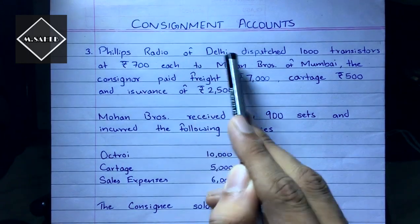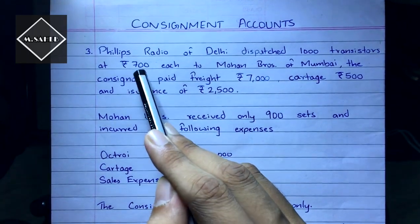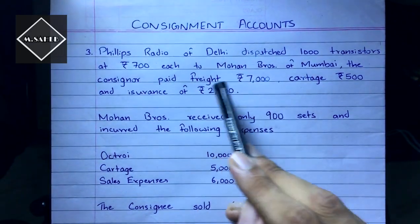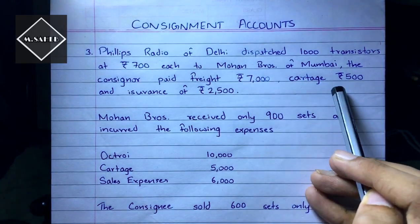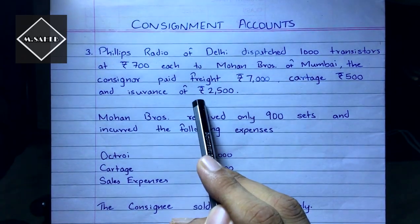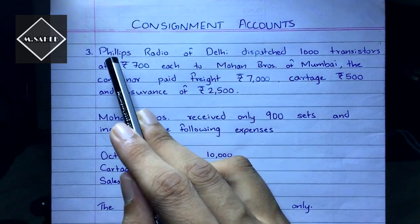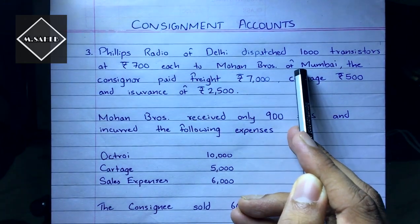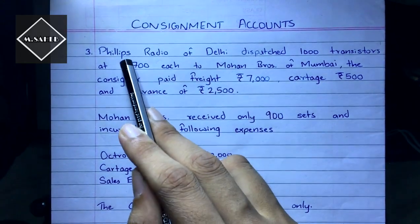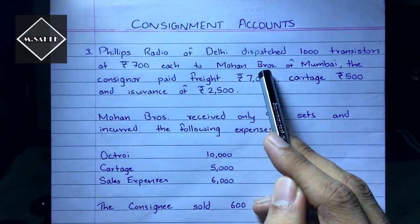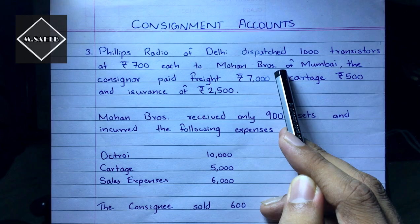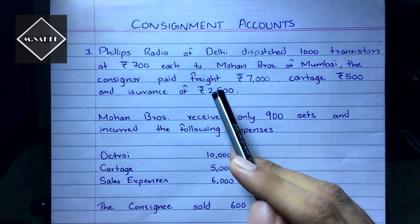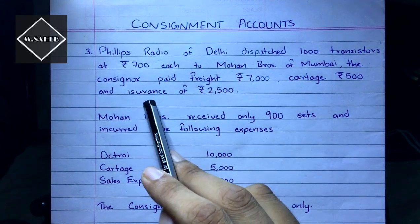Philips Radio of Delhi dispatched 1,000 transistors at ₹700 each to Mohan Brothers of Mumbai. The consignor paid freight of ₹7,000, cartage of ₹500, and insurance of ₹2,500. So Philips Radio is the consignor and Mohan Brothers is the consignee.